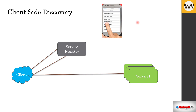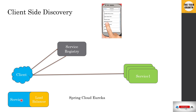In client-side discovery, the client has its own business logic plus a built-in load balancer. Once it gets the list of running instances from the service registry, it load balances the request internally. One example is Spring Cloud Eureka, where the Eureka client handles discovery and load balancing on the client side automatically through configuration.